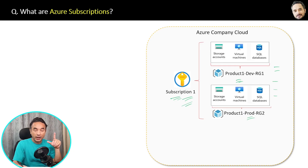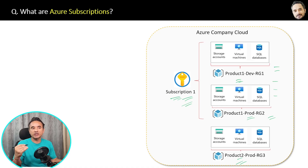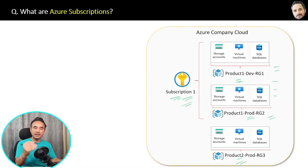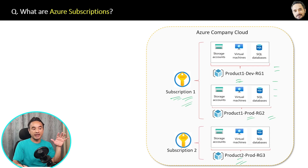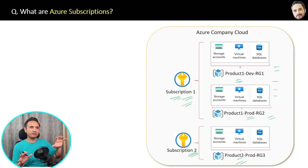Similarly, in the same company there can be another product — Product Two — with separate resource groups like Product Two Dev, Product Two Staging, and Product Two Production. There will be a different product owner or manager for that product who will have a different subscription, by which that manager will pay the bills of those resources. So Product One has a different subscription and Product Two has a different subscription.